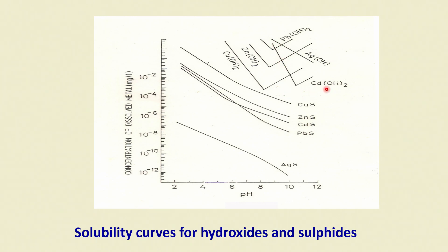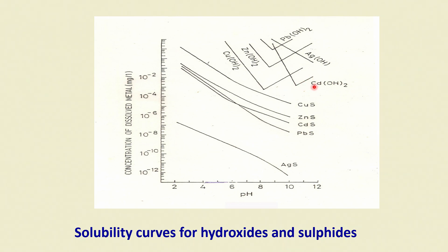Similarly for cadmium: cadmium sulphide is a better form for disposal as sludge than cadmium hydroxide. Cadmium hydroxide starts precipitating from 10⁻¹ to 10⁻² around pH 10, but if you increase alkalinity further, the solubility increases and cadmium goes back into solution. The same is true for lead hydroxide. Silver hydroxide is the only exception where solubility keeps decreasing.